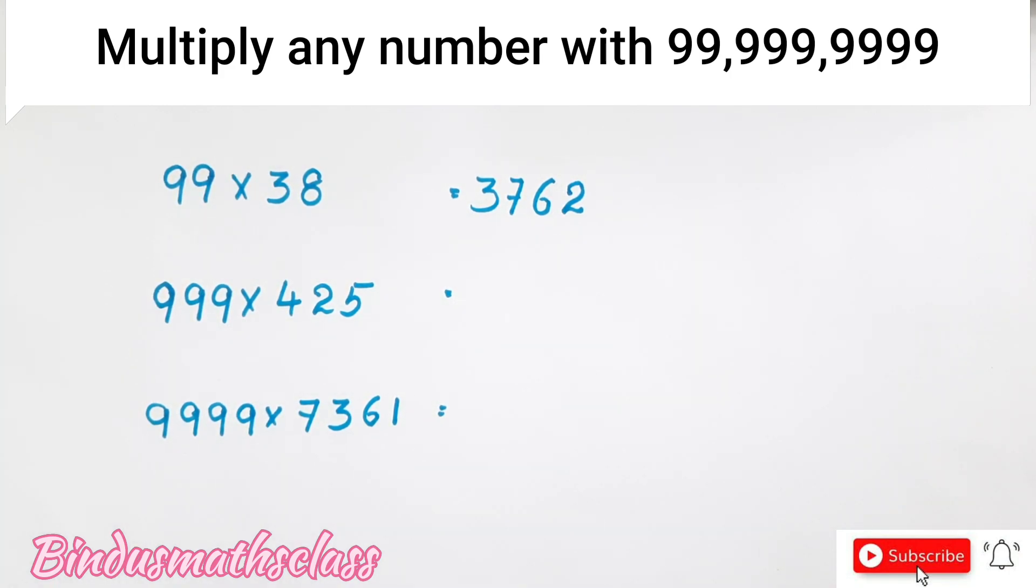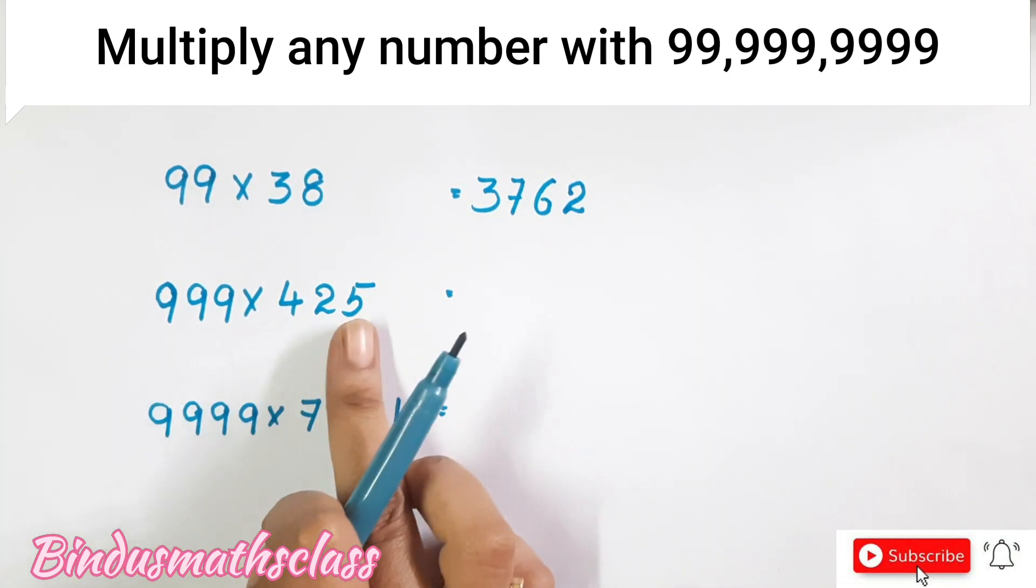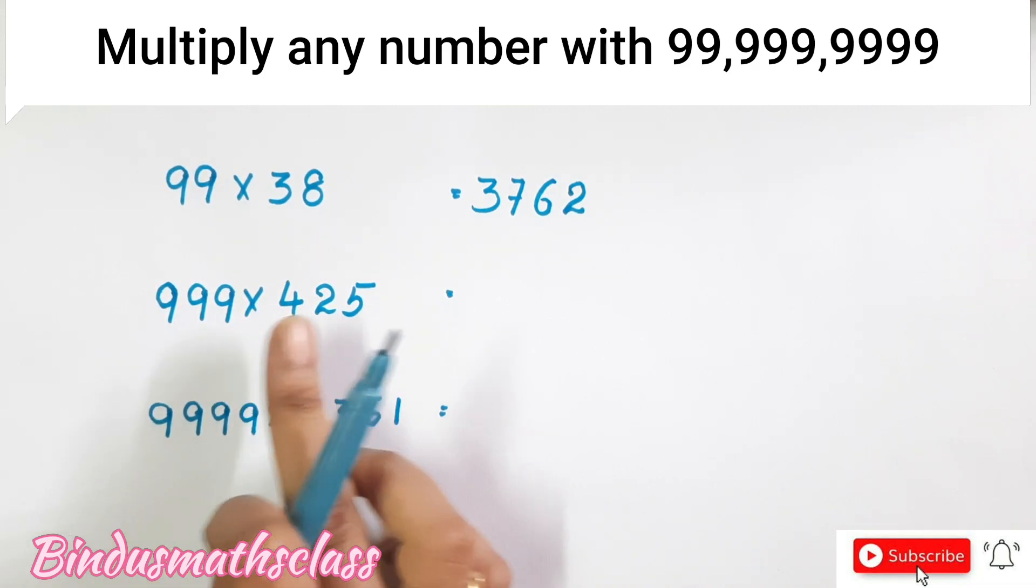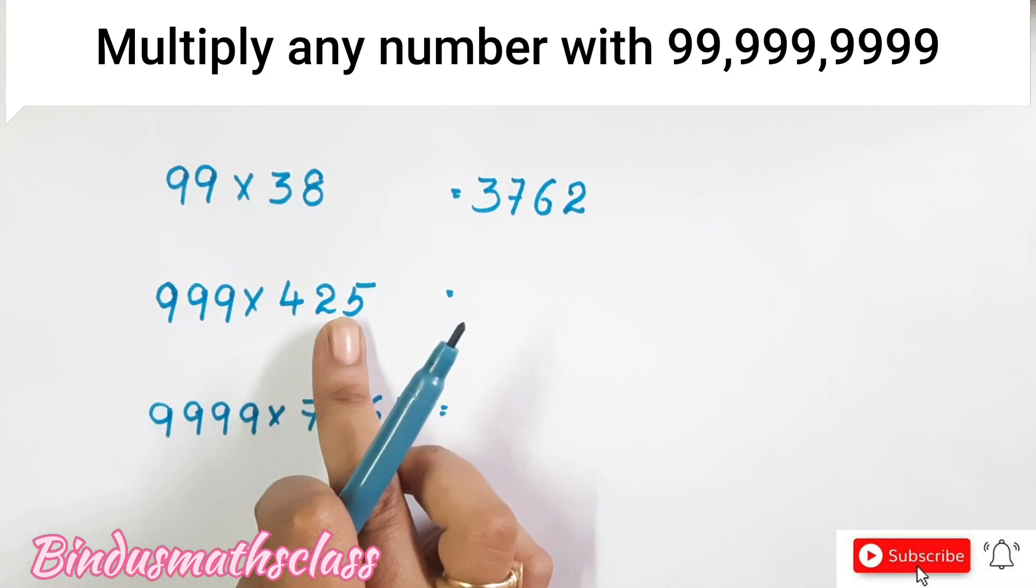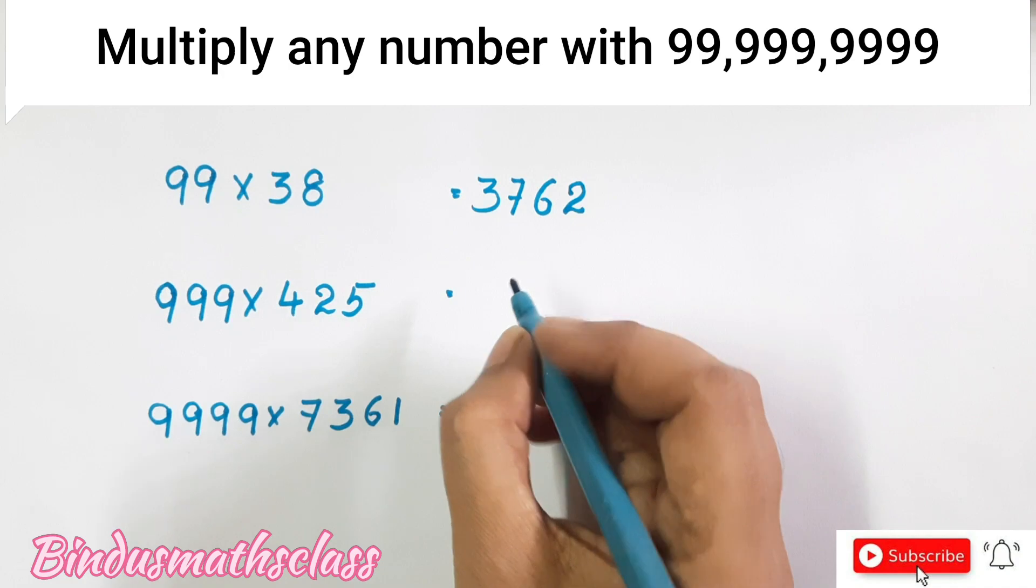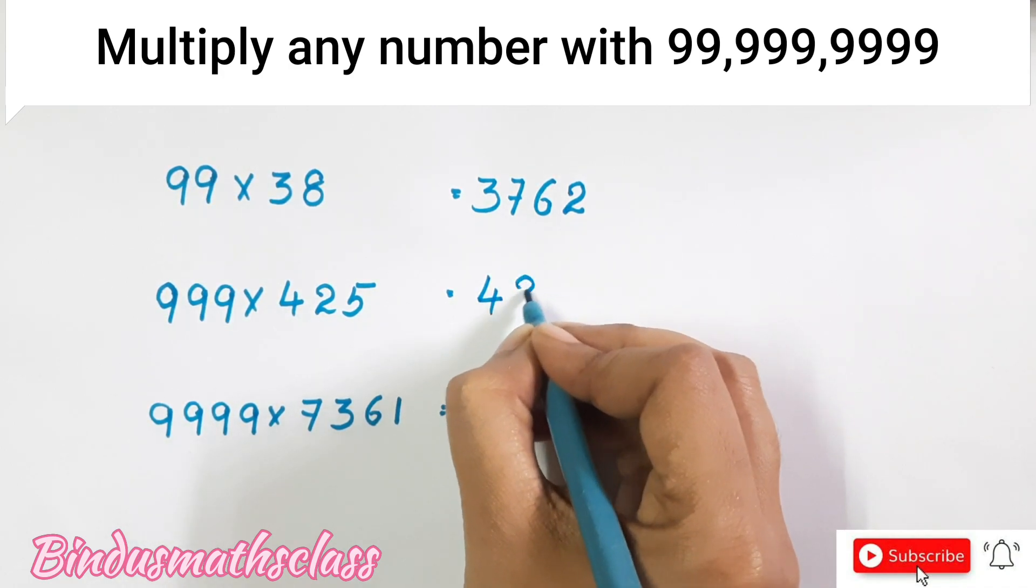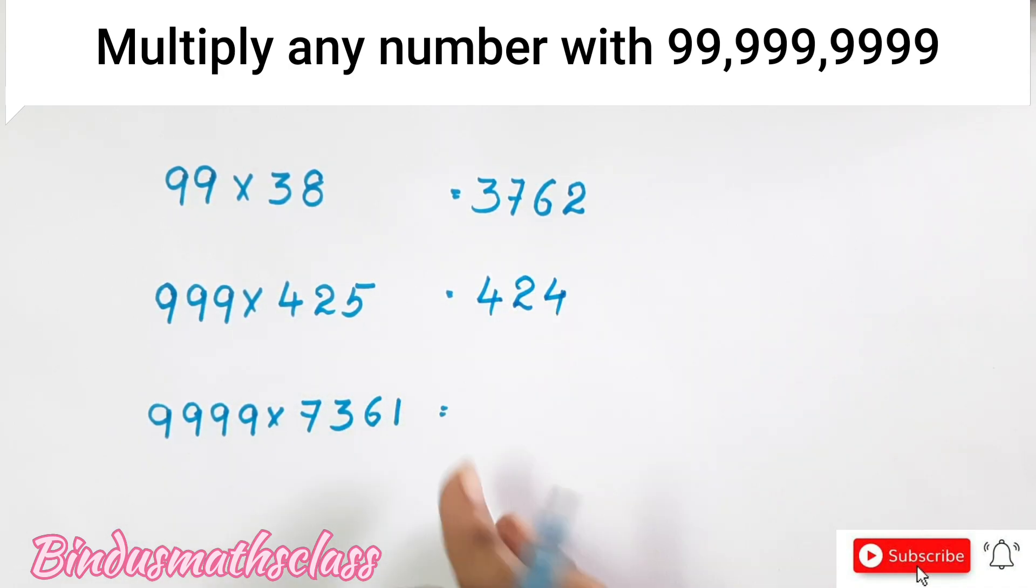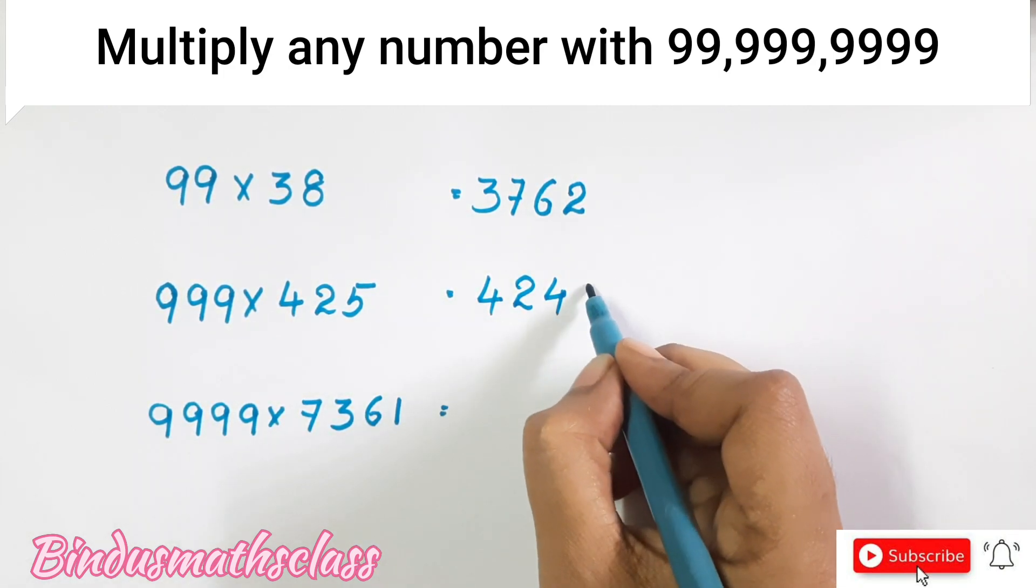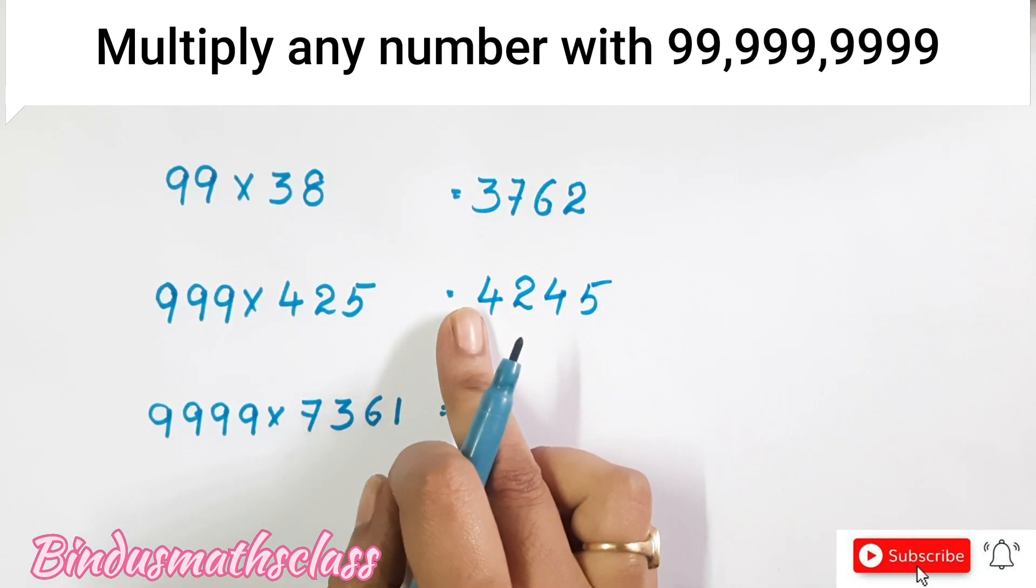Let's write more examples. So here, 3 digit number by 3 digit and all are 9's. So just before number to the 425 is 424. Now all these numbers are added up to 9's. So here 5. So here 5 because 5 is to be added to 4, it will get 9.